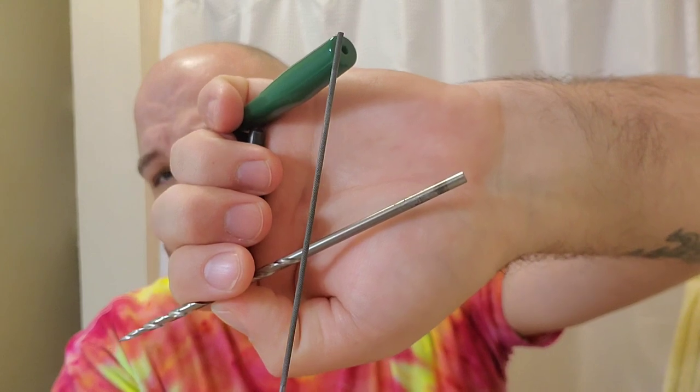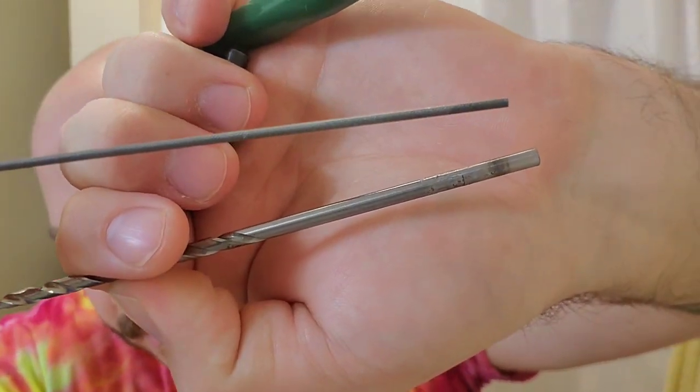Lastly, you're going to need a jeweler's file. This is a sixteenth of an inch round jeweler's file. You're going to want to use that.